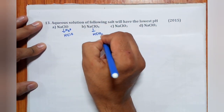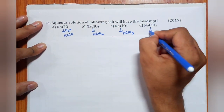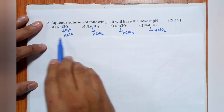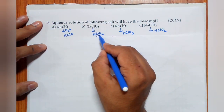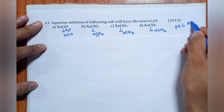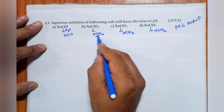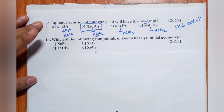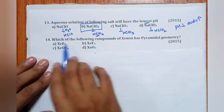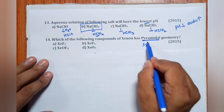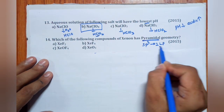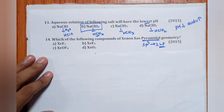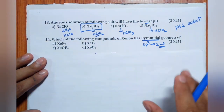Question 13: Aqueous solution of which salt has the lowest pH? Lowest pH means most acidic. On hydrolysis: NaClO4 gives HClO4, NaClO3 gives HClO3, NaClO2 gives HClO2, NaClO gives HClO. Since HClO4 is the strongest acid (oxidation state +7), NaClO4 gives the lowest pH. Answer is (b) — NaClO4.